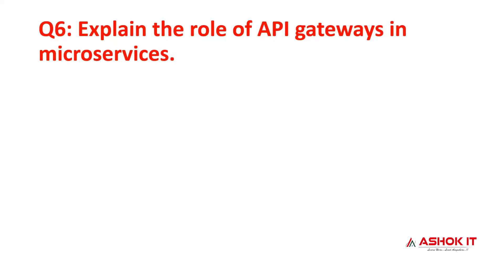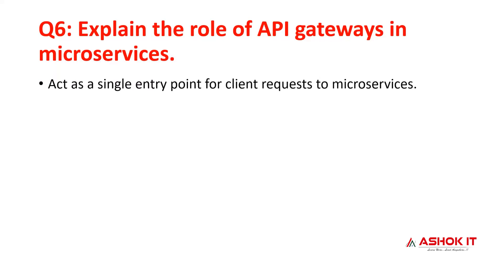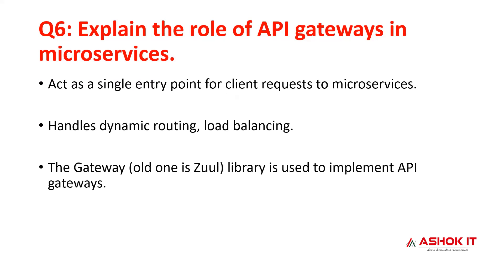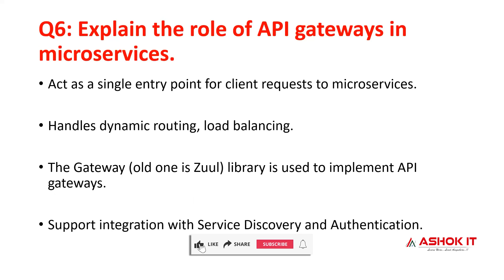Question 6: explain the role of API gateways in microservices. There should be a single entry and exit point for all microservices when a client makes a request. It handles dynamic routing and load balancing — choosing the instance with the least load, executing the microservice, and returning the response. The new API gateway library is Spring Cloud Gateway; the old one is Zuul. It also integrates with service discovery like Eureka and supports authentication mechanisms like username/password or secure tokens.